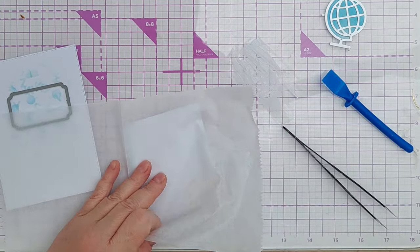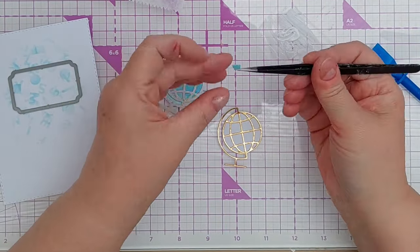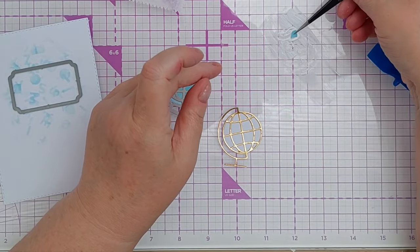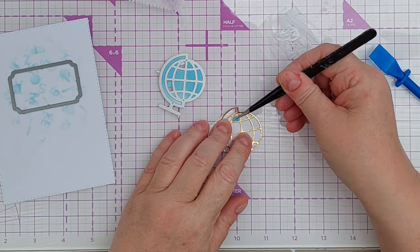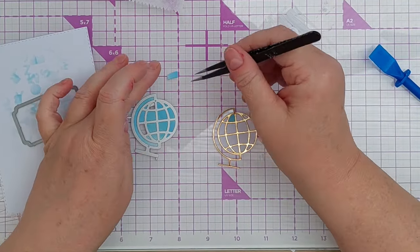I then die cut another globe from the bluey-greeny paper using the die and then set about inlaying the bluey-greeny bits into my gold globe. This was very easy, it didn't take too long at all.